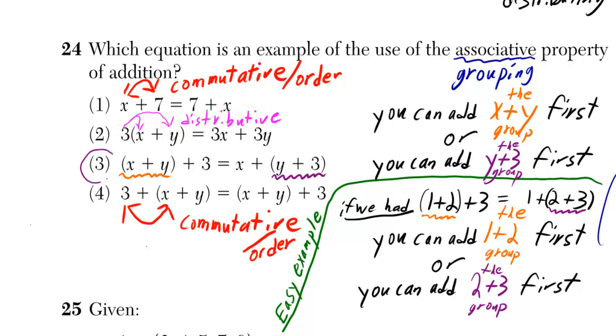The answer is three, and the reason why is because the only thing that is changing from the left side to the right side is that we are choosing to add the x plus y group first.